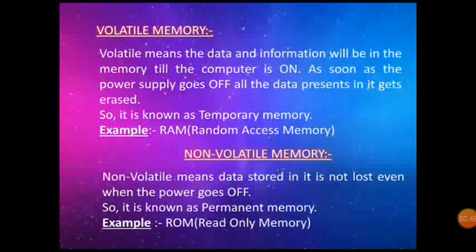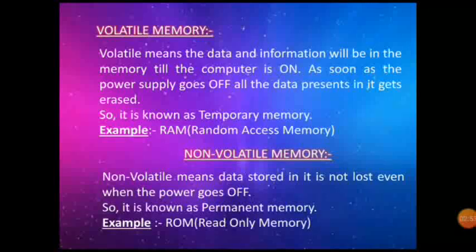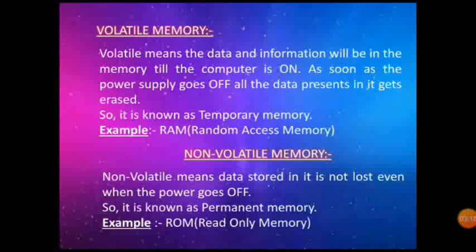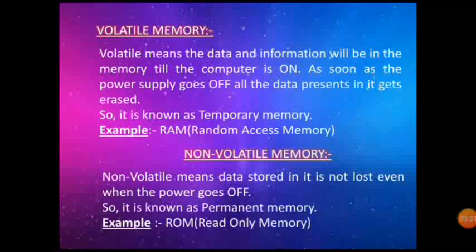This is very important: what is volatile and what is non-volatile? Volatile means data and information will remain in memory only while the computer is on. As soon as the power goes off, all data gets erased — that's why it is called temporary memory. The example of volatile memory is RAM. Non-volatile means data stored is not lost even when the power goes off — that's why it is called permanent memory. The example of non-volatile memory is ROM.